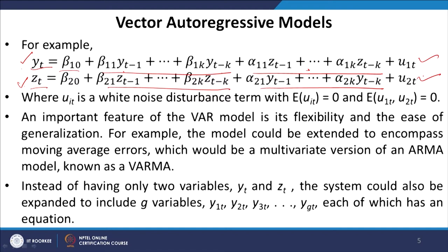The error terms u1t and u2t (i = 1, 2) are white noise disturbance terms with expected value equal to 0. There is no covariance or correlation between the two error terms — that is, E(u1t · u2t) = 0 — so the errors are independent of each other.